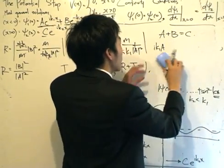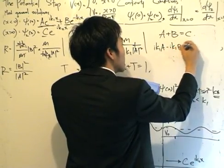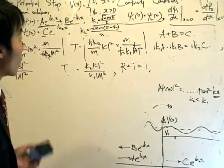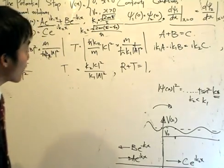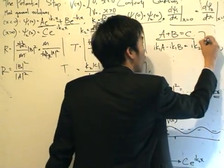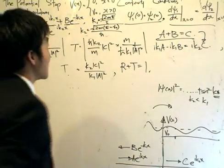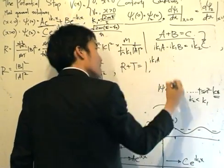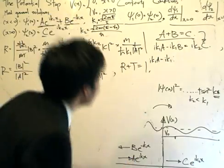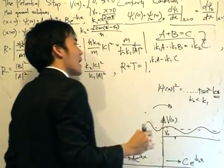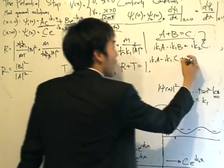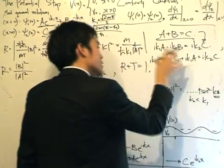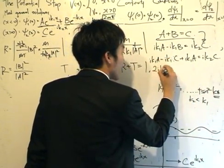I'll get i K1 A minus i K1 B is equals to i K2 C. Two equations, three unknowns. Let's express B and C in terms of A. I'll get i K1 A minus i K1 C, and since it's minus A, I will plus, because minus multiplied by minus, i K1 A, and it's equals to i K2 C. I will group these two terms together, I'll get 2 i K1 A.